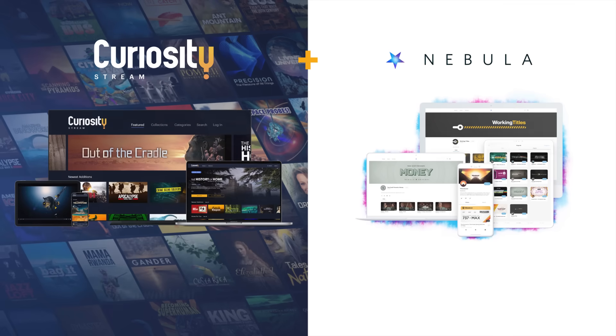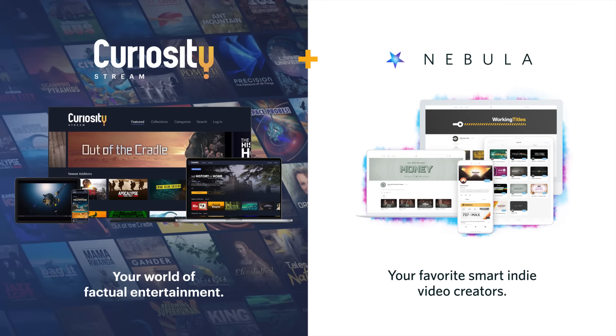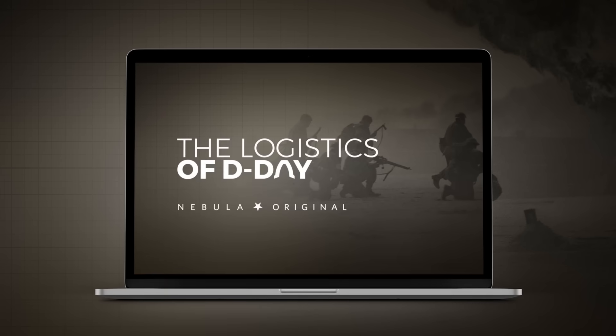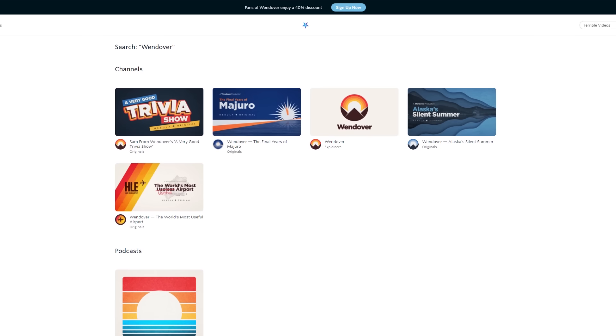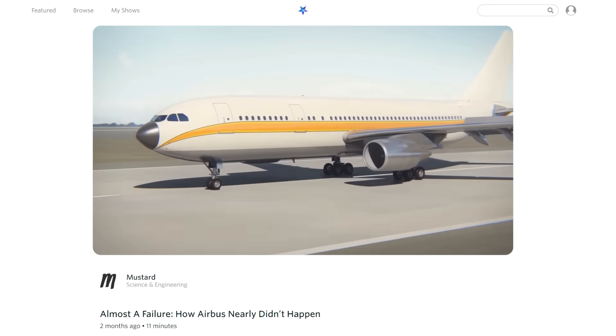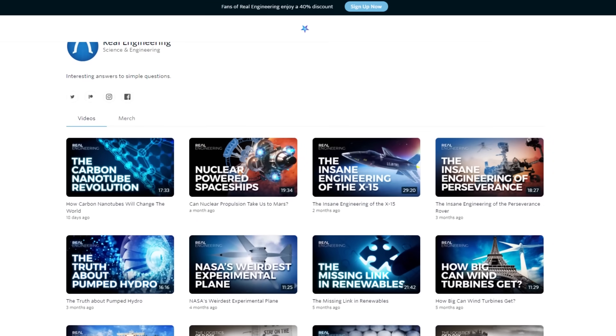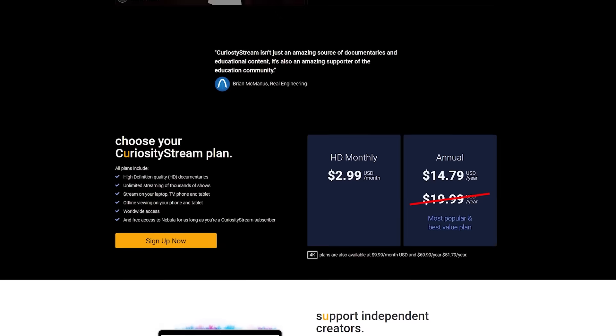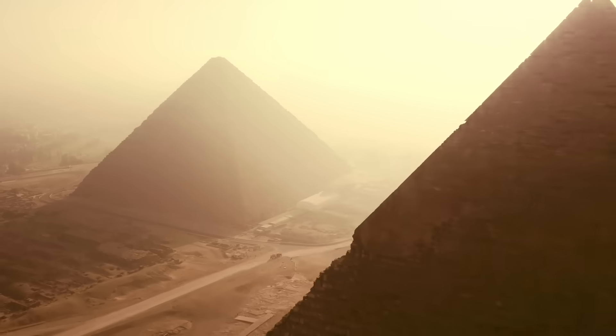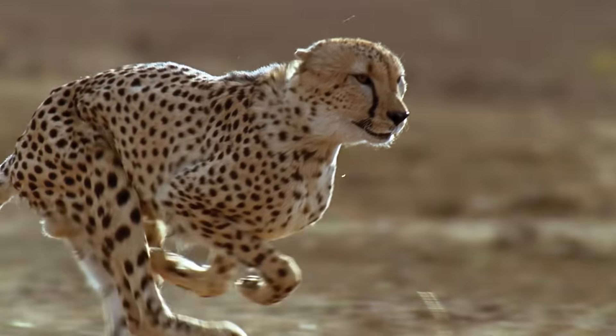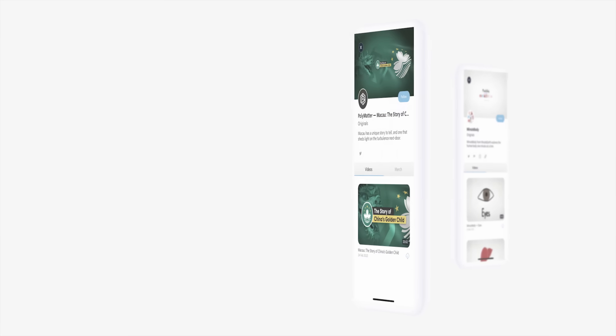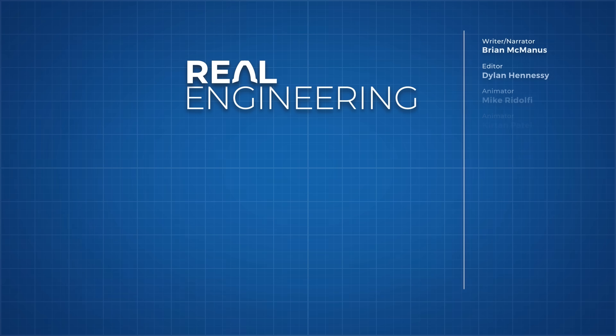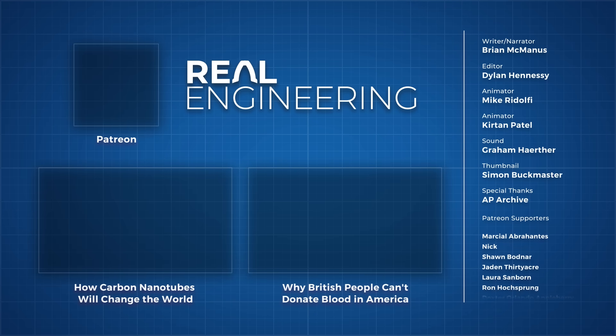You get a lot more than just extended cuts by signing up to Nebula through the Curiosity Stream and Nebula bundle deal. You will get access to our exclusive content like the 9 part, 2 hour long, Logistics of D-Day series, along with originals from Wendover Productions, Mustard, Tom Scott and City Beautiful. Ad free versions of our videos and podcasts, and that's all bundled in for free when you sign up to Curiosity Stream for the extremely low price of $14.79 a year. That's a win win. If you are looking for something else to watch right now, you could watch our previous video explaining the material science of carbon nanotubes, or watch Real Science's latest video exploring why British and Irish people cannot donate blood in the United States.